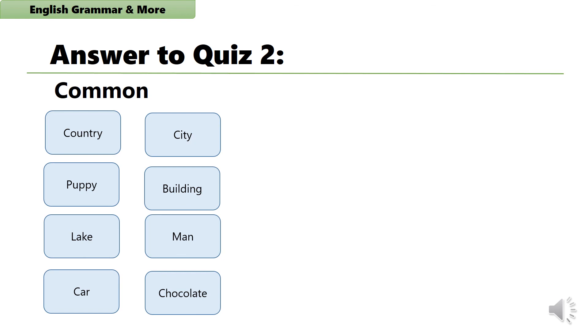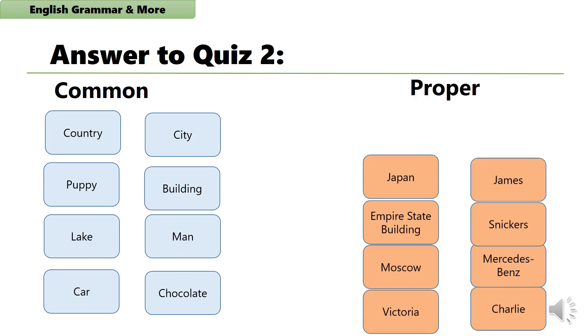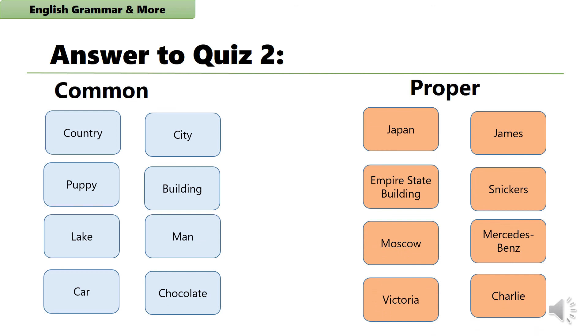and proper nouns included Japan, Empire State Building, Moscow, Victoria, James, sneakers, Mercedes-Benz, and Charlie.